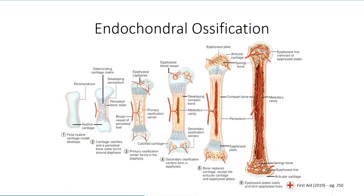The second type of bone development is referred to as endochondral ossification, which literally means growth within the cartilage. This form of development occurs for the majority of bones within the body and, as the name implies, requires the initial development of a cartilage model, as described in the previous session.